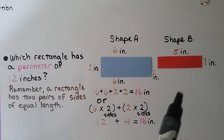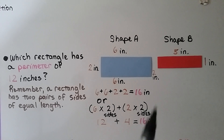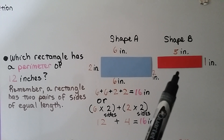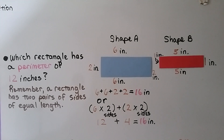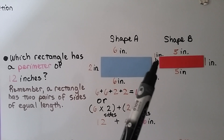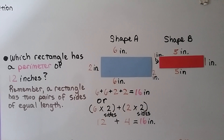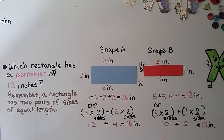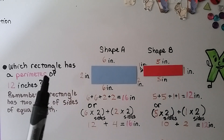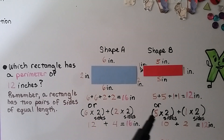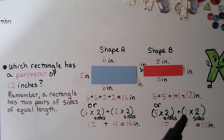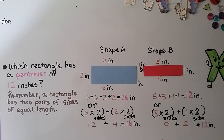It must be shape B, but let's do the math to be sure. Shape B has a 5-inch side, so we know the opposite side is also 5 inches. If one short side is 1 inch, then the other is 1 inch. We add 5 plus 5 plus 1 plus 1, which equals 12. So shape B is the rectangle with a perimeter of 12 inches. We also could have done 5 times 2 plus 1 times 2, giving 10 plus 2, which equals 12 inches.